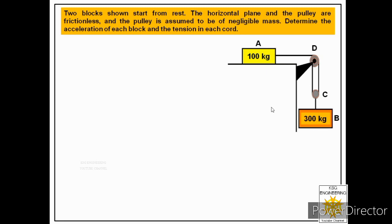In order to solve this problem we first need to identify how many free bodies to draw. If you look carefully, there are three bodies in motion: block A, block B, and pulley C. So we need to draw the free body diagram of each of these three bodies.